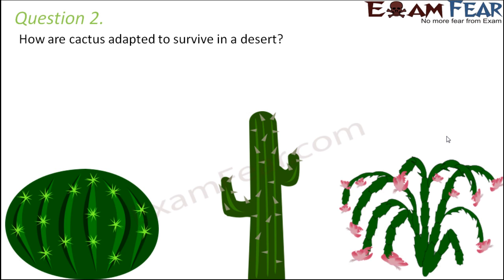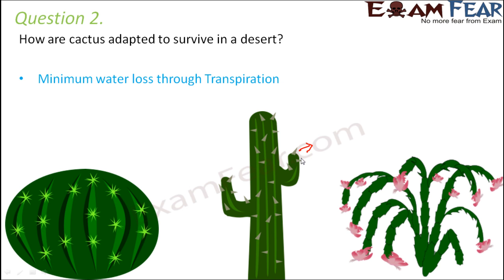Question number two: how are cactus adapted to survive in a desert? A desert is an area that is very hot during the day and very cold at night. It has sandy soil everywhere which doesn't support a lot of vegetation, making it quite a challenging environment for plants to survive. But specialized plants like cactus do survive. They have adaptations such as leaves modified into spines, which causes minimum water loss, because transpiration is the process in which water is lost from leaves — and here they do not have leaves at all, so transpiration is minimal.